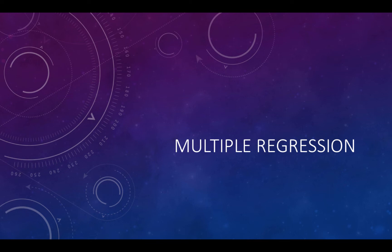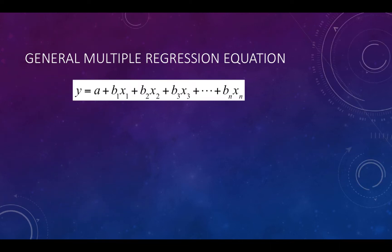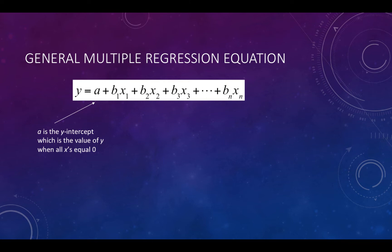This week we are going to talk about multiple regression, expanding on simple linear regression. Multiple means we are putting in more than one x, so we have more than one independent variable. In this general equation, there are n x's. A is the y-intercept, just like in simple linear regression — it is the value of y when all the x's equal zero.